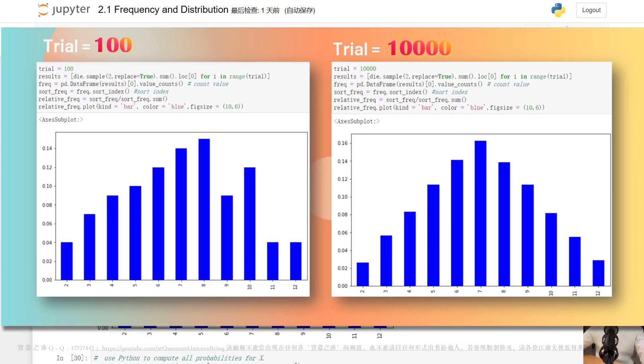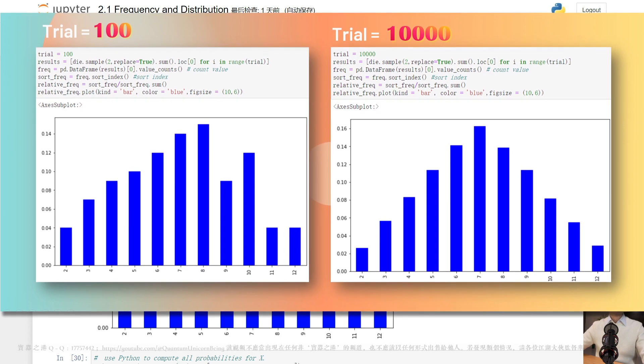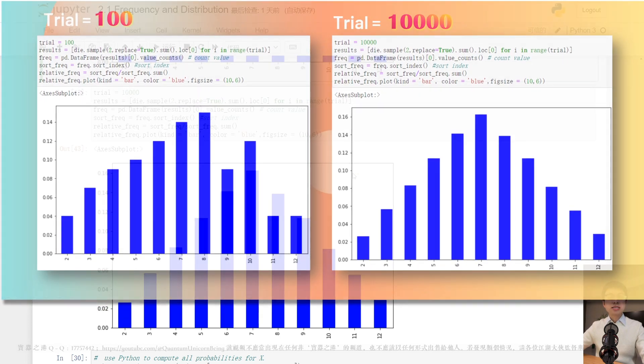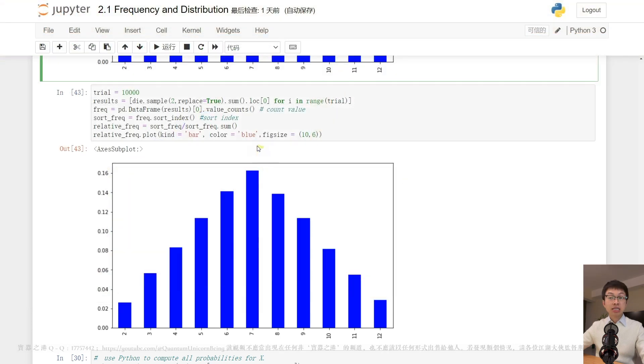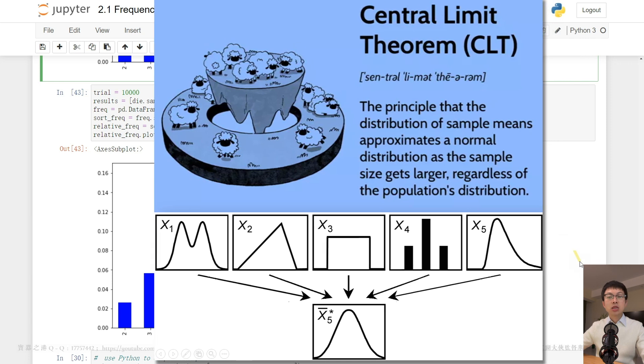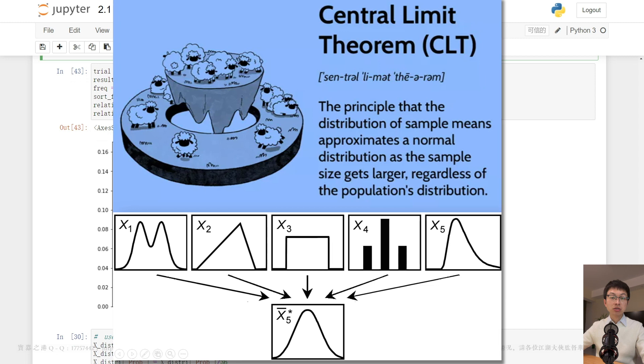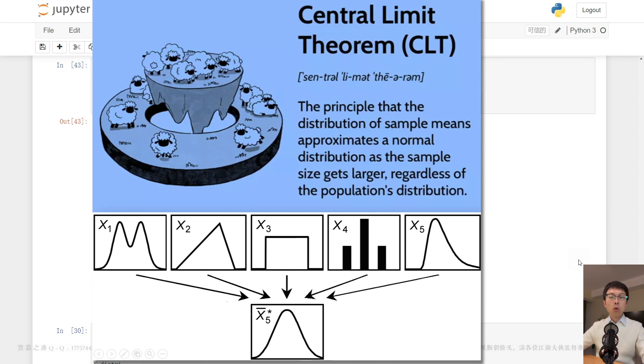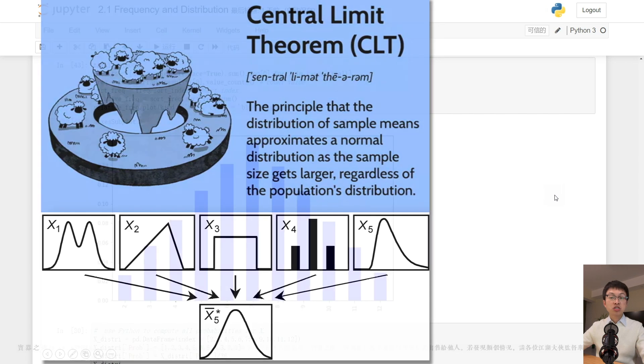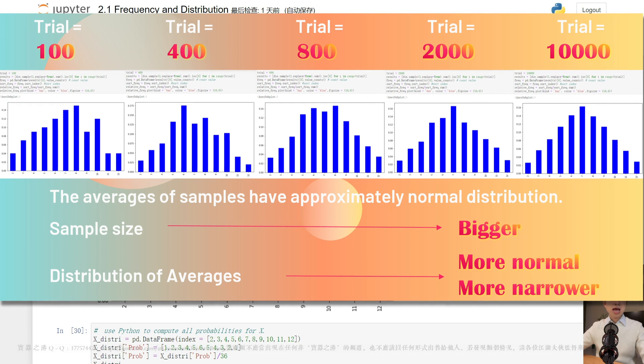Here, I'm going to introduce the concept of central limit theorem. In probability theory, the central limit theorem, aka CLT, states that the n variable approximates a normal distribution as the sample size becomes larger, assuming that all samples are identical in size, and regardless of the population's actual distribution shape.